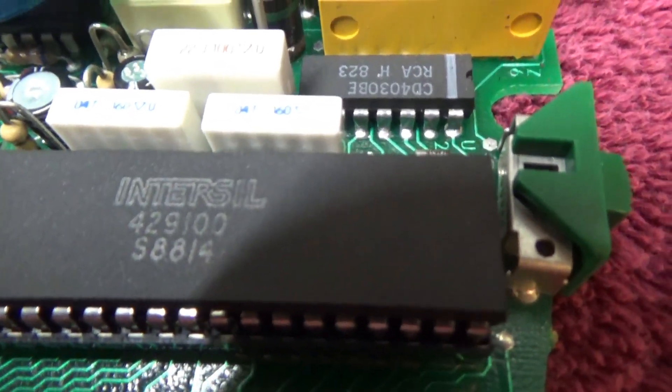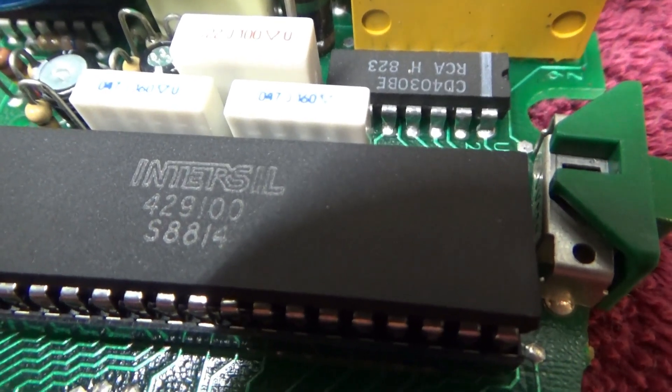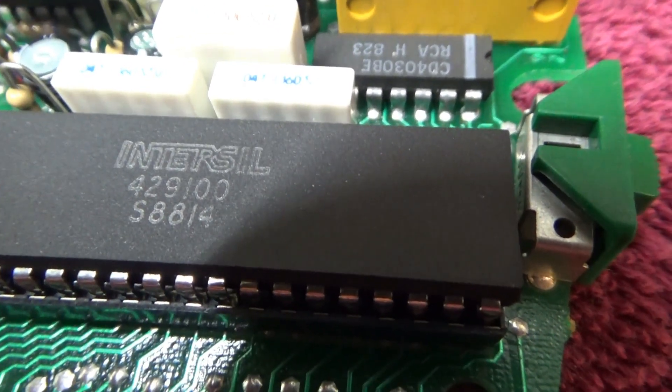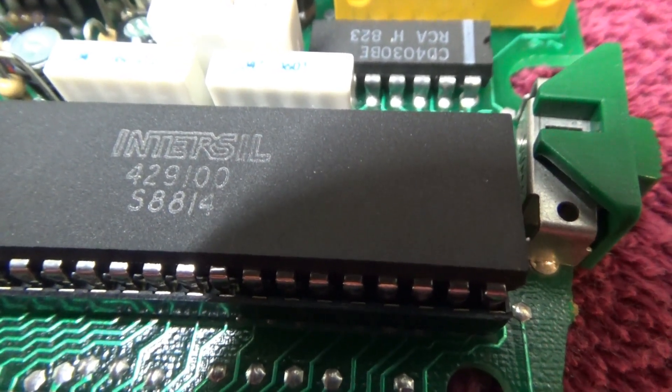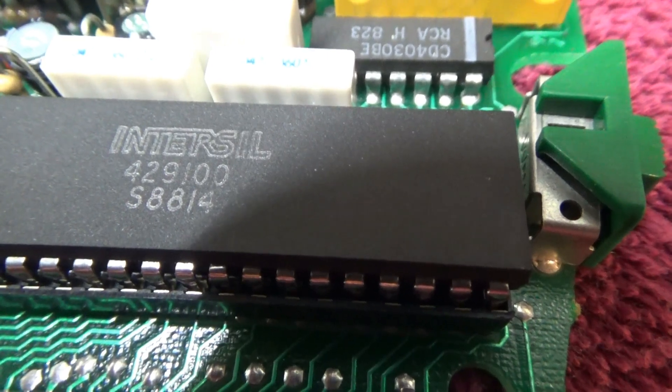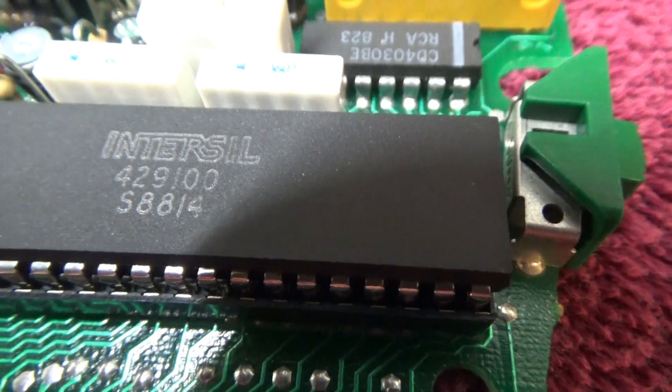I think I was reading that code incorrectly. I think right under the Intersil label is the chip part number, and then right below it, that S8814, I think that's the 14th week of 1988. That makes more sense.